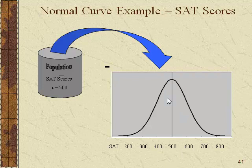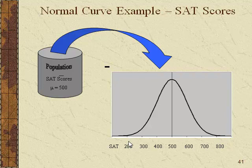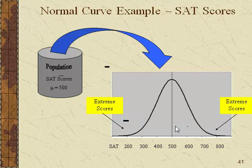That central tendency range represents the most common scores, and variability runs from 200 to 800. The plus or minus three standard deviation marks representing 200 and 800 are very extreme and show up just a small percentage of the time. Extreme scores on the ends will be important to the logic of hypothesis testing, which we'll get to later on.